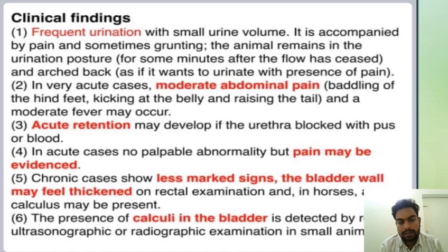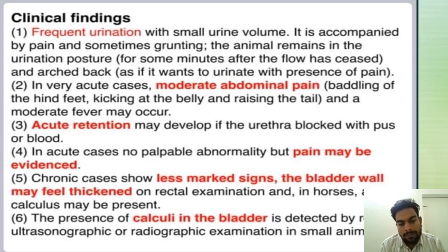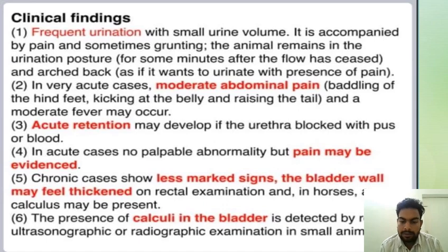Acute retention may develop if the urethra is blocked with pus or blood. In acute cases there is no palpable abnormality but pain may be evidenced. Chronic cases show less marked signs; the bladder wall may feel thicker. The presence of calculi in the bladder is detected by urethroscopy.